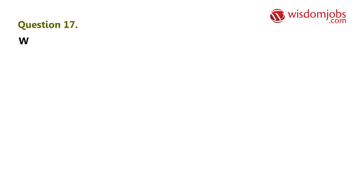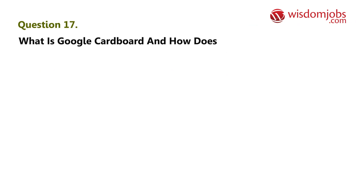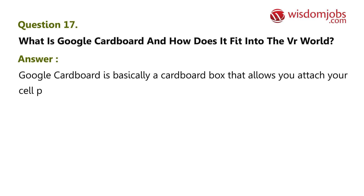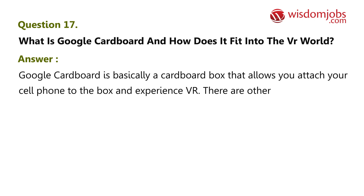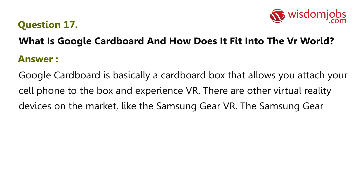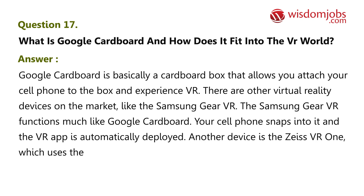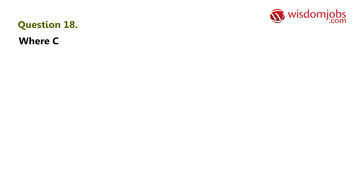Question 17: What is Google Cardboard and how does it fit into the VR world? Answer: Google Cardboard is basically a cardboard box that lets you attach your cell phone to experience VR. There are other VR devices on the market, like the Samsung Gear VR, which functions similarly — your cell phone snaps in and the VR app is automatically deployed. Another device is the Zeiss VR One, which uses the same VR apps as Google Cardboard.